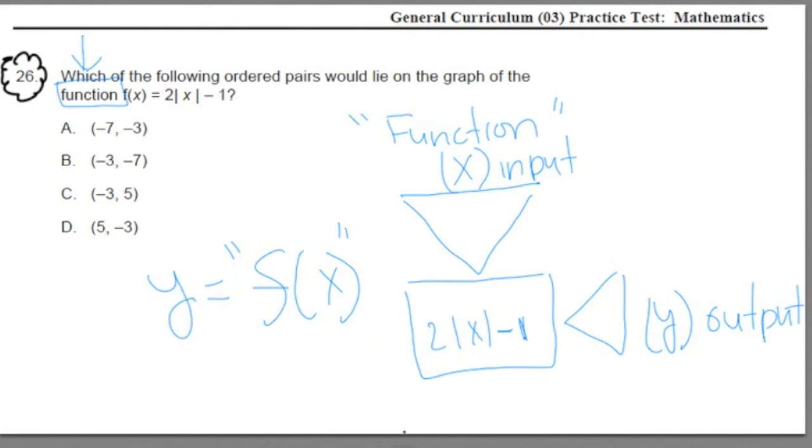Now, the way I'd like to solve it with you is to test out these inputs and outputs. Only one of these input and outputs is going to work. It's going to be a point that is in this function and if we graphed it, would be on the line of the graph. And the fastest way to test it is just to start inputting these values into our function machine and see if it lines up with the corresponding output.